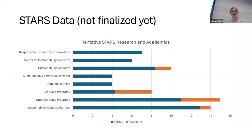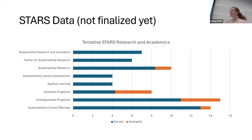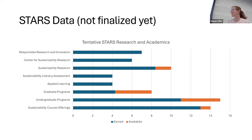STARS is a huge assessment we do every few years — it stands for the Sustainability Tracking Assessment and Reporting System. It's like a giant report card for sustainability in higher education, tailored to universities. If you're familiar with ESG reporting from companies, this is our version. The most unique part is that it includes academics — it looks at research and courses on campus connected to sustainability. Our not-yet-finalized scores from this year's survey are in review and will be public online in a couple of weeks.